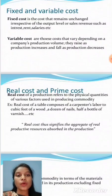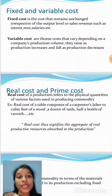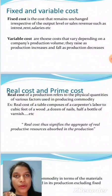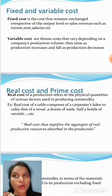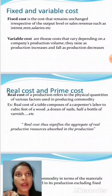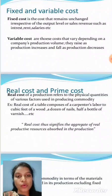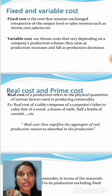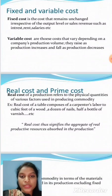Variable cost varies with the level of output produced. These costs rise as production increases and fall as production decreases. For example, with 4 labourers we produce 100 units. To produce 200 units, we need another 4 labourers. Labour is the variable cost here, as it varies with the level of output produced.